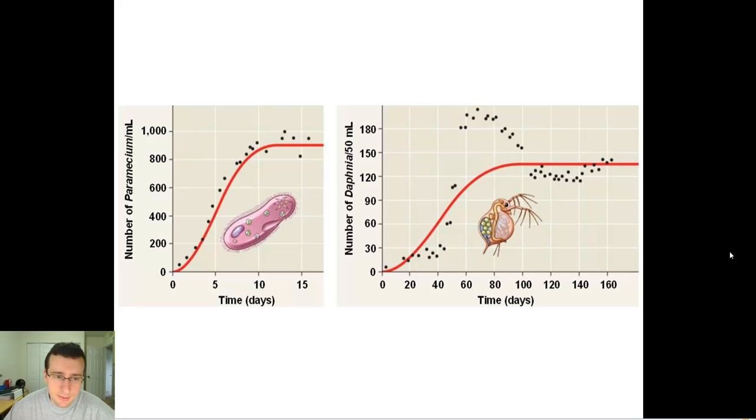So in the last video, we talked about limits to population growth, and we talked about how populations can increase and decrease sometimes throughout time because of these things. Now, I want to talk about some examples of fluctuations that occur within the population across time.